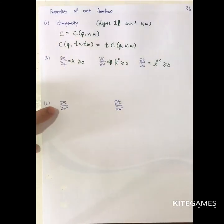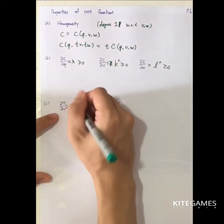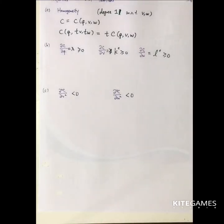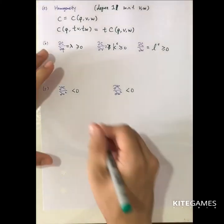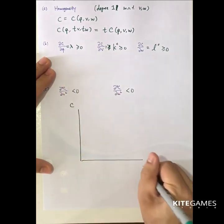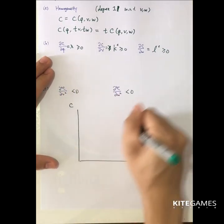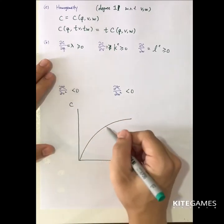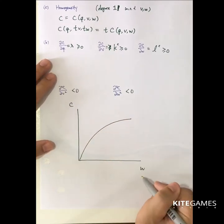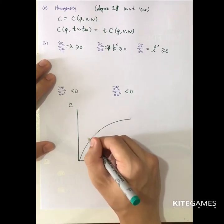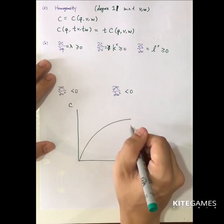Finally, the second partial of C with respect to V squared is negative, and similarly for W. This shows that the cost function is concave in input prices. If you draw it in a diagram, the cost function will not be a straight line — rather, it will be concave. Because when one factor's price increases, the firm will try to substitute with the other input, so the increase in total cost will not be linear.